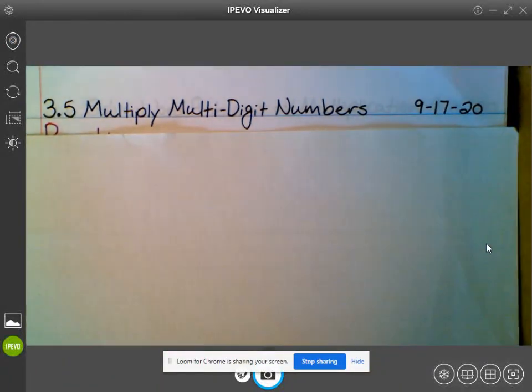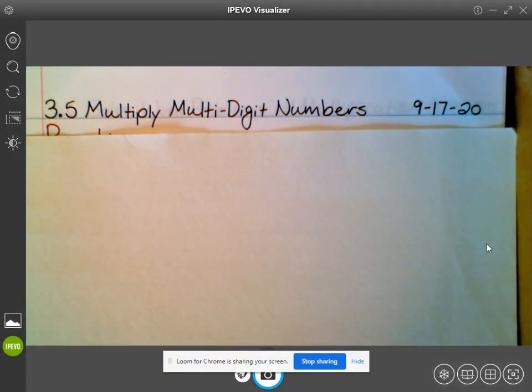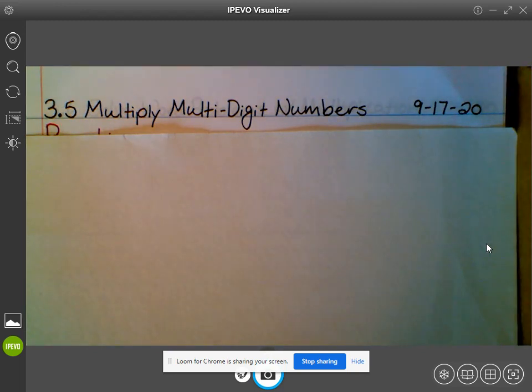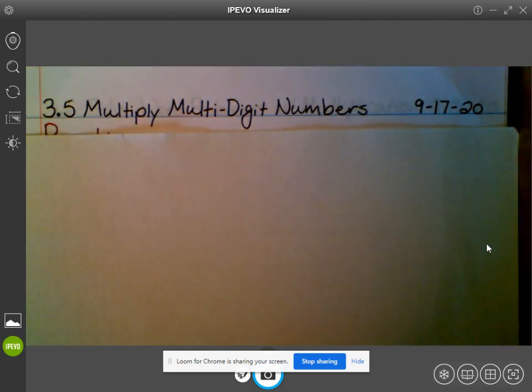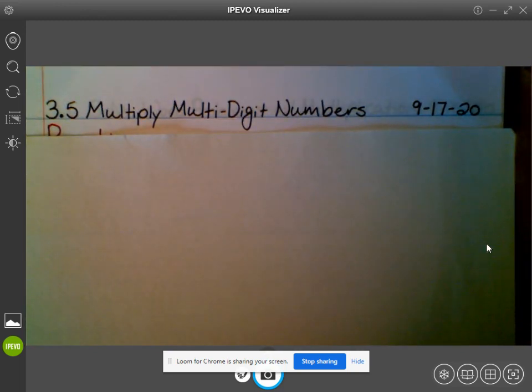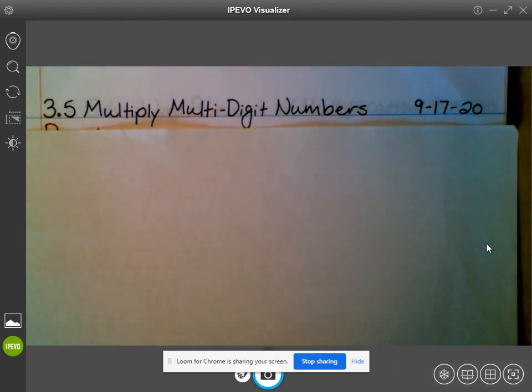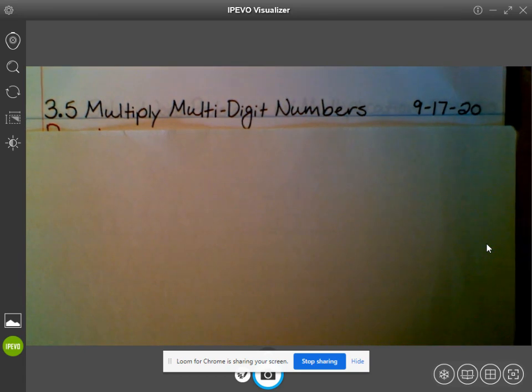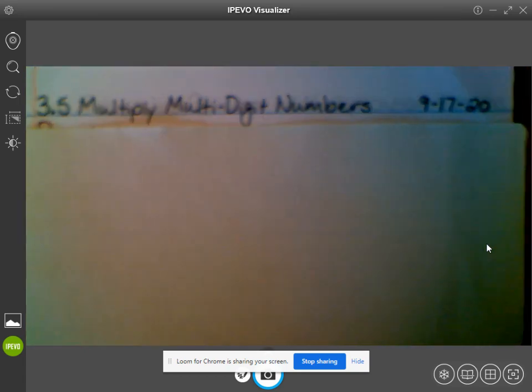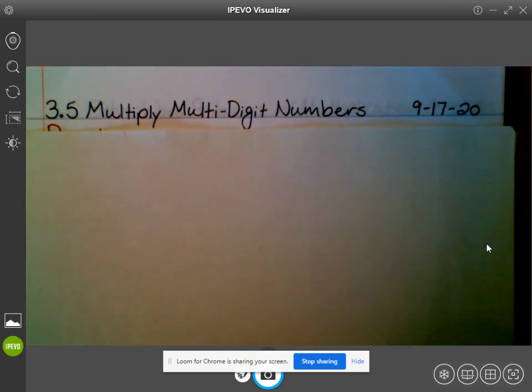We are opening up to the next clean page in our math notebook, and we are titling today's notes 3.5 Multiply Multi-Digit Numbers, and we are putting today's date of 9-17-20 in the top right corner.